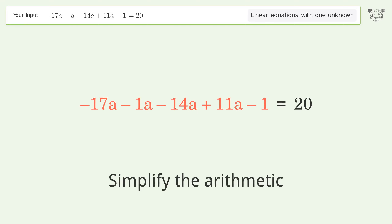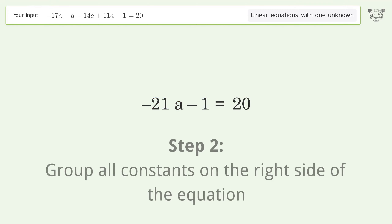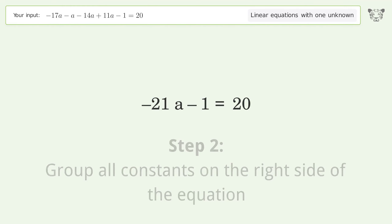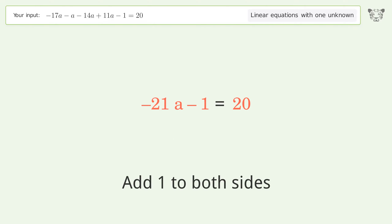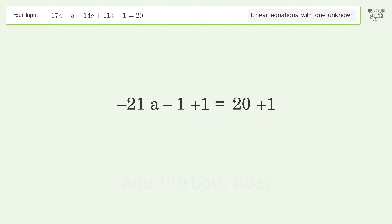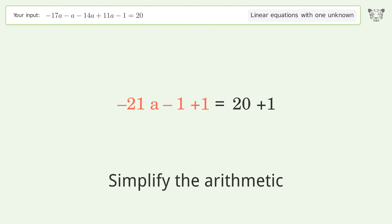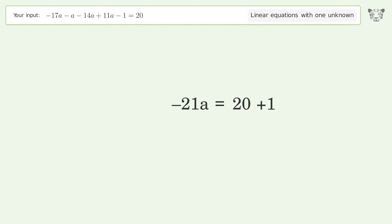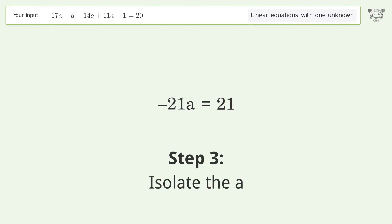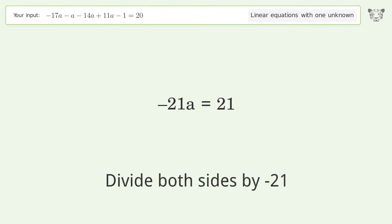Simplify the arithmetic. Group all constants on the right side of the equation — add one to both sides. Simplify the arithmetic. Isolate the a: divide both sides by negative 21.